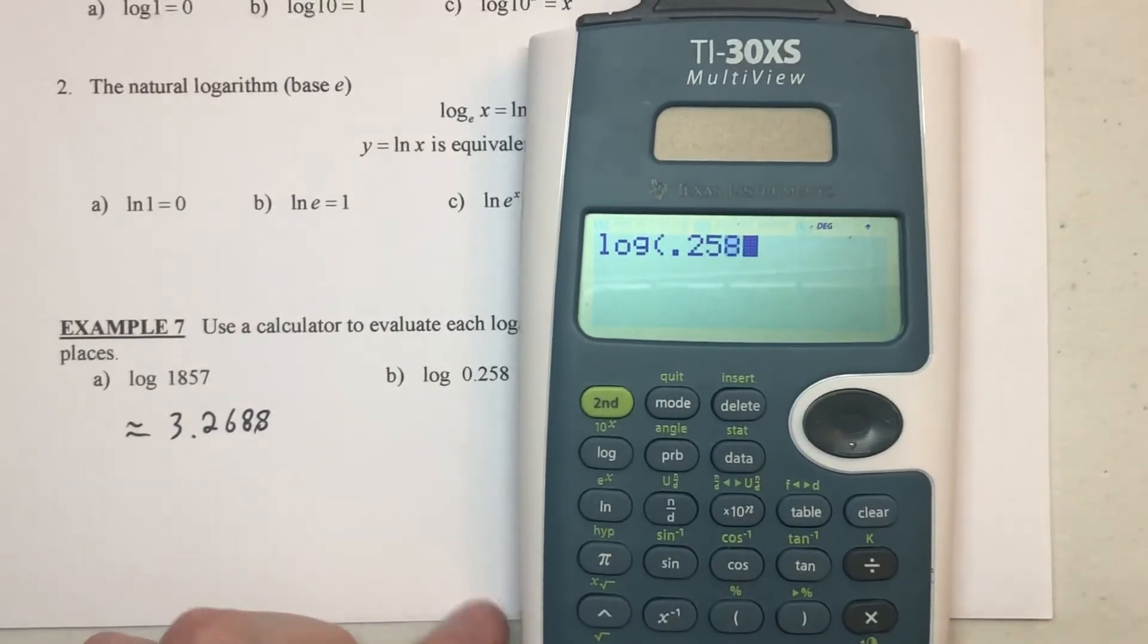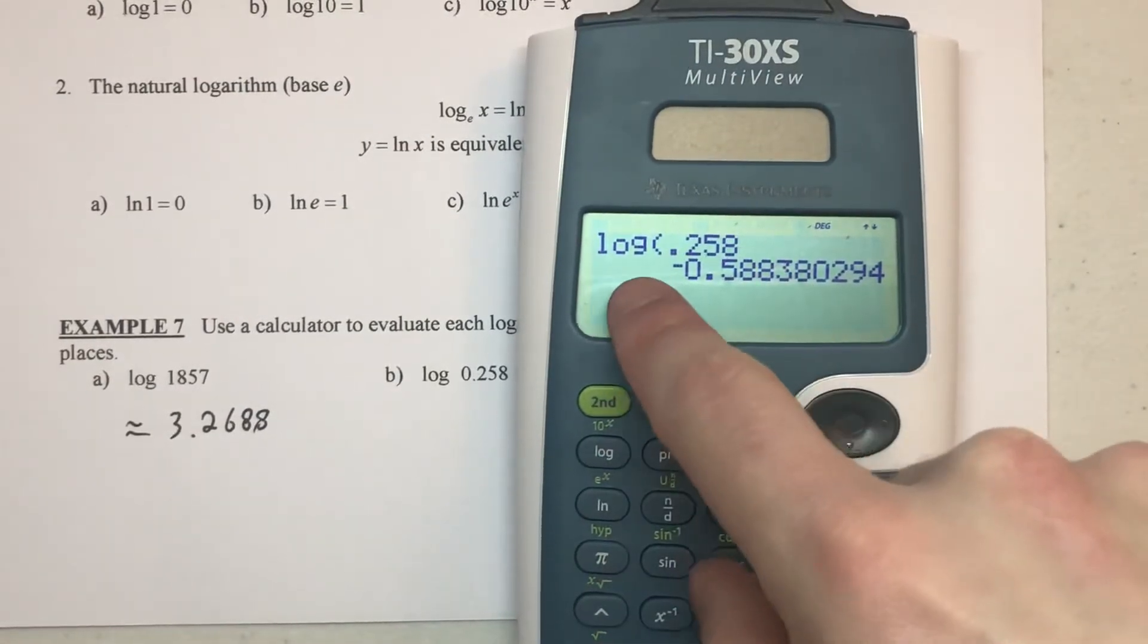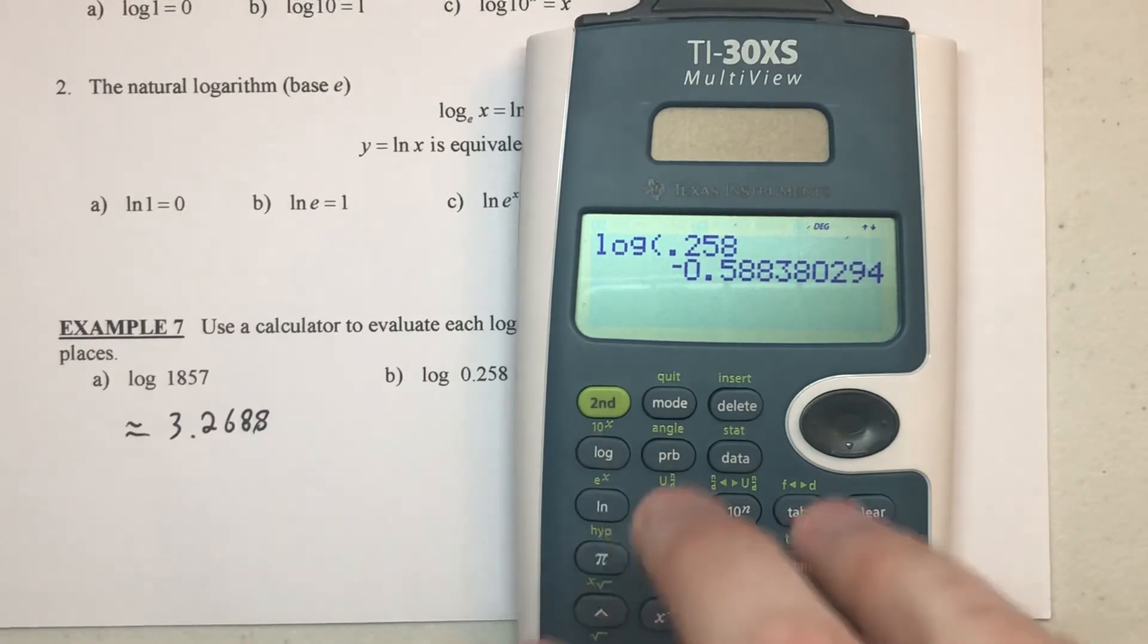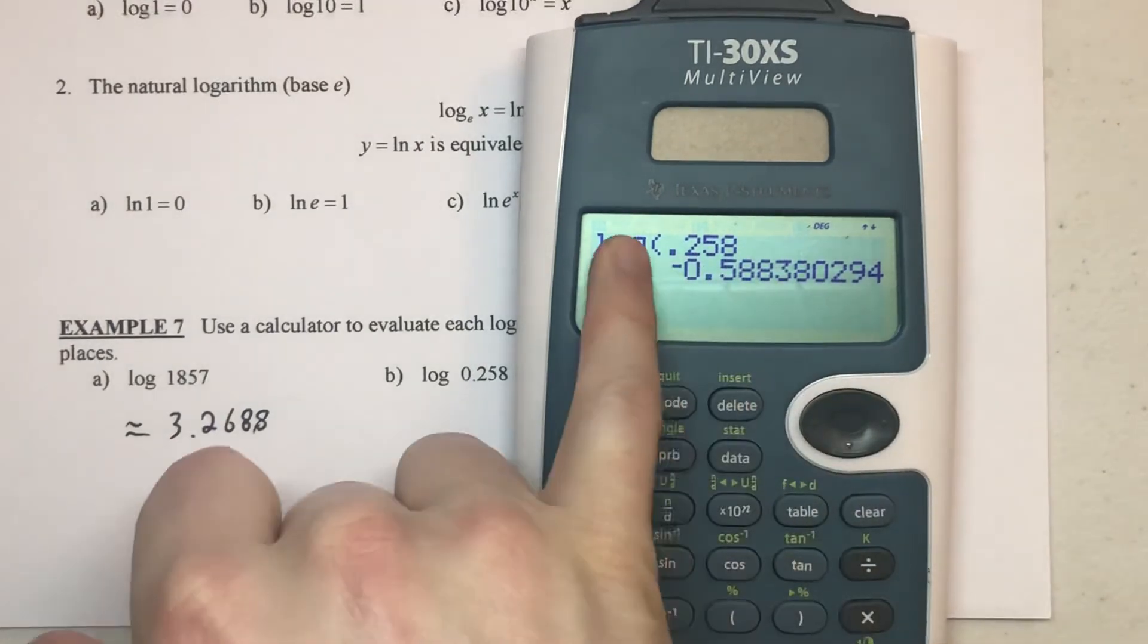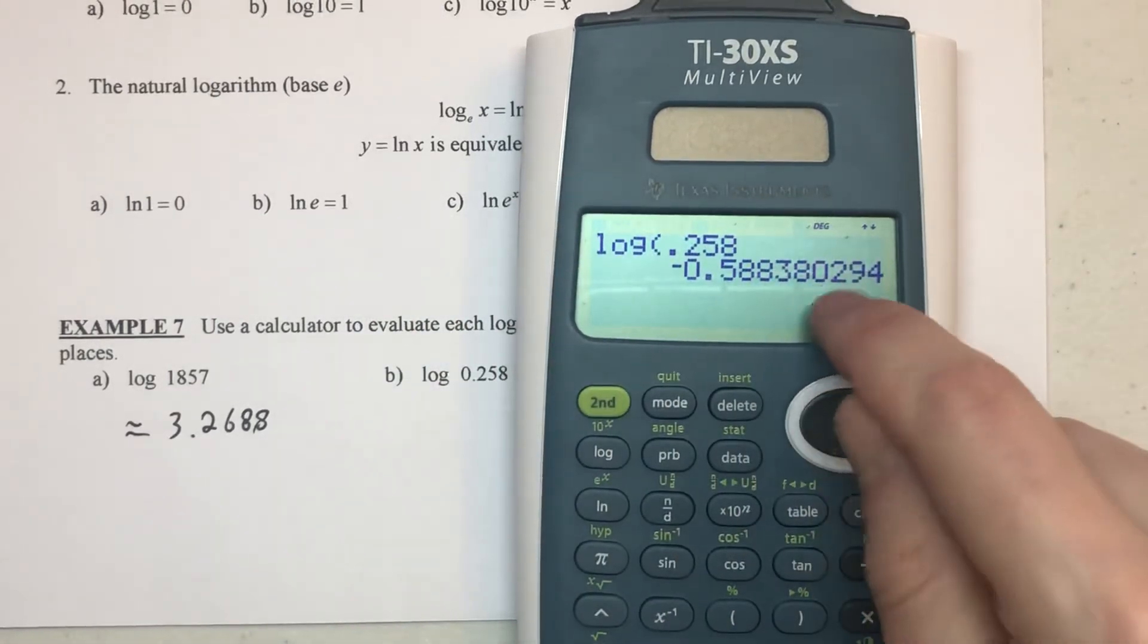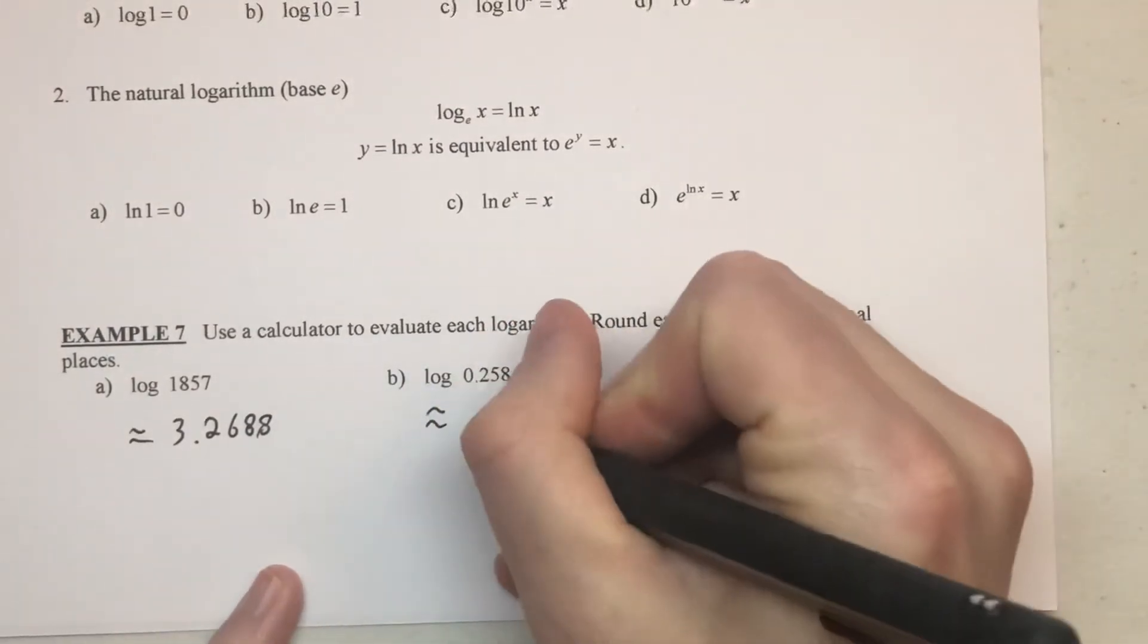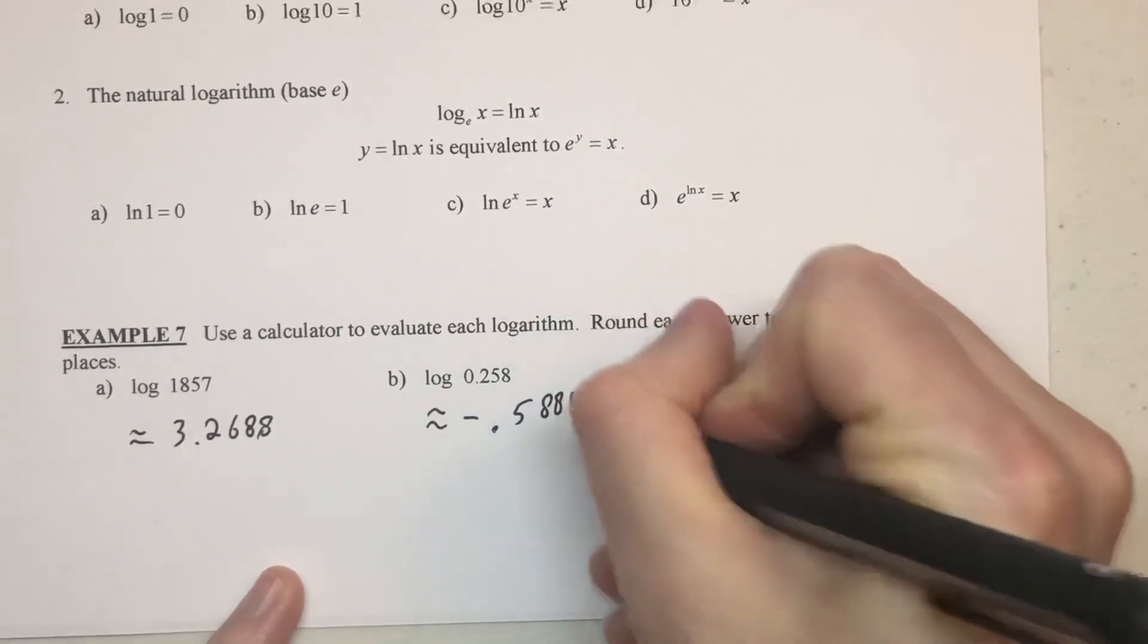So for our next one, I could type 258 and then hit enter. If whenever you hit the log button, if you don't see this type of syntax or this notation on your calculator, then most likely your calculator, when you hit log, it takes the log of the number you have currently entered there. So for those calculators, you would actually type the number 0.258 first and then hit the logarithm button, and it would immediately convert and tell you what the logarithm of 0.258 was. So just be aware of which way your calculator needs that entered. But this one was negative 0.5883 and we'll round that to four.